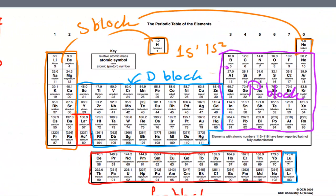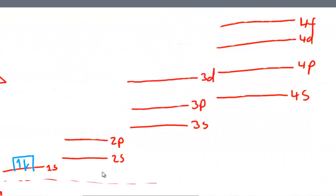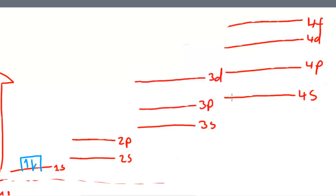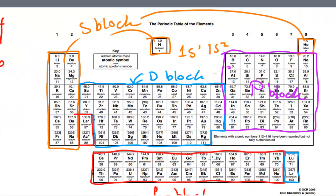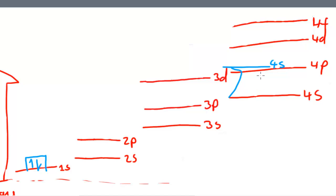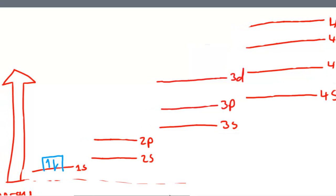A weird thing happens when you go to the D block. The energy level of the 4s orbital actually becomes higher than the energy level of the 3d orbital. But despite this, the 4s orbital still tends to fill up before the 3d orbital. This has something to do with the shielding caused by the 3d orbitals. You can find out more about that online — maybe go to something like ChemGuide.